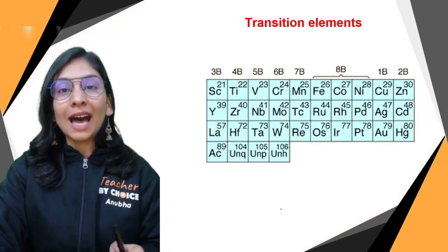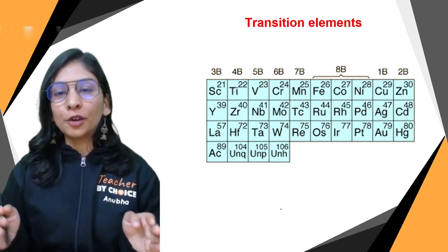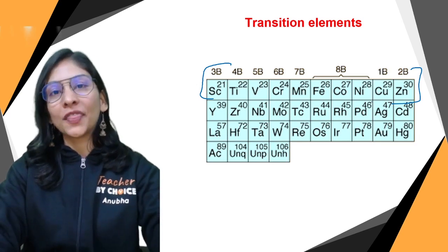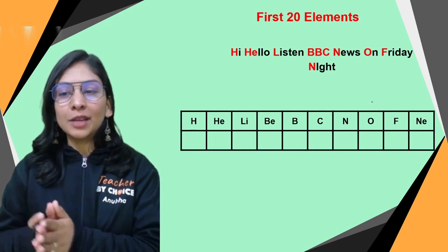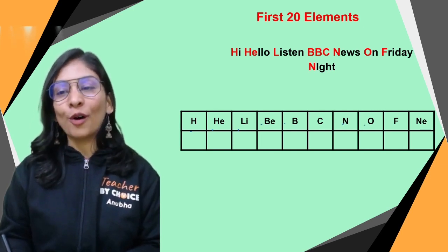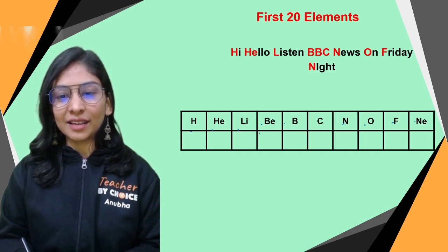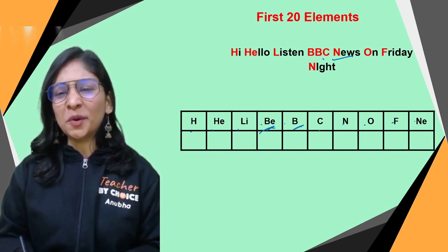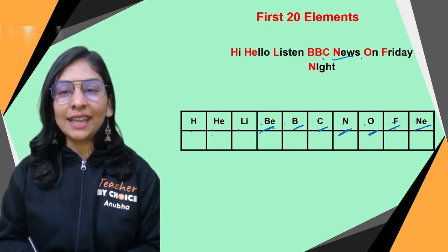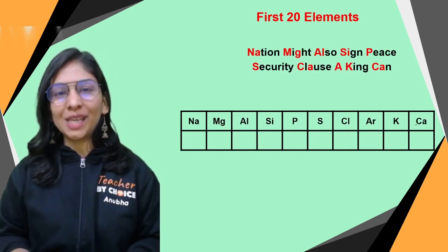Now let's remember the first 30 elements. For elements 1 to 10 (Hydrogen to Neon): 'Hi Hello Listen BBC News On Friday Night' — H (Hydrogen), He (Helium), Li (Lithium), B-Be-B-C (BBC: Beryllium, Boron, Carbon), N (Nitrogen), O (Oxygen), F (Fluorine, 'on Friday'), Ne (Neon, 'Night').